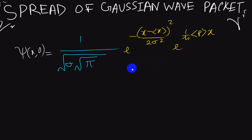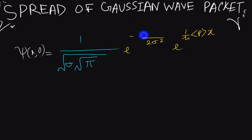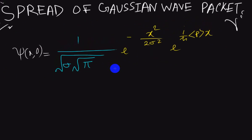Hello guys, this is Steve with another video. Last time we found the expression for the uncertainty of a Gaussian wave packet at time t=0. At t=0, we have a wave function, and the expectation value of x is also 0, so that term reduces to x². We need to find ψ(x,t), the wave function at time t.